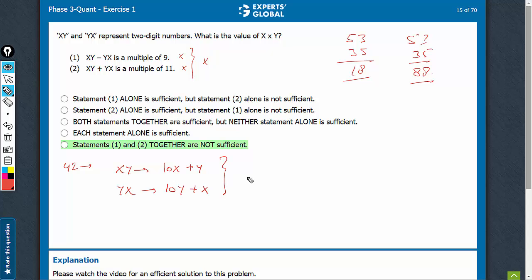The sum of these values is 11x plus 11y, and therefore, this is a multiple of 11 always, irrespective of what the value of x or y is.